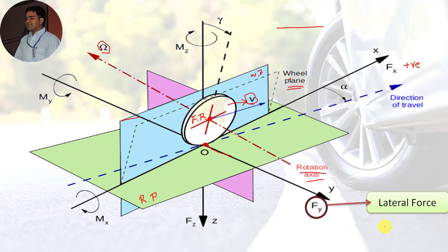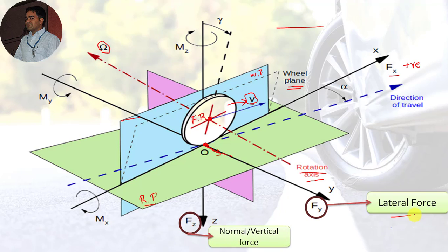The next term is lateral force. It is the component of the force acting on the tire by the road, in the plane of the road and normal to the intersection of the wheel plane with the road plane. I want to emphasize that both longitudinal force FX and lateral force are components of the force already defined in my previous video on dynamic axle load — you can refer to that video via the link in the description.